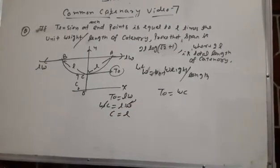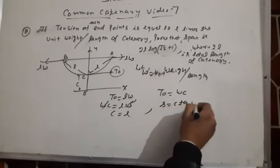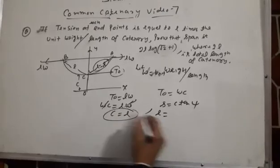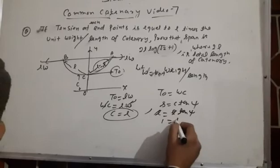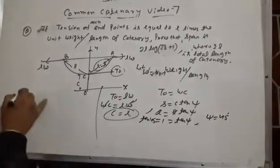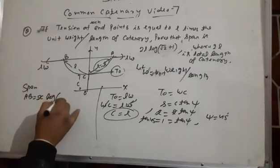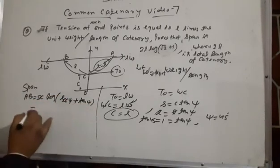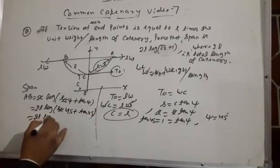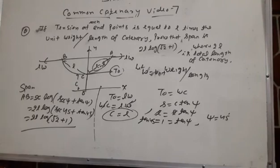Using s = c tan(θ) and the relation y = c sec(θ), at the endpoint s = l. From the catenary equation x = c sinh⁻¹(s/c) = c sinh⁻¹(l/c). With c = l, this gives x = l sinh⁻¹(1). Since sinh⁻¹(1) = log(1 + √2), the span AB = 2x = 2l log(√2 + 1), which is what we needed to show.